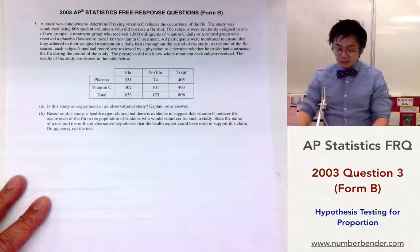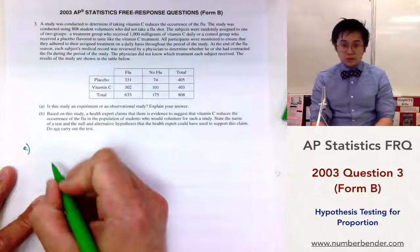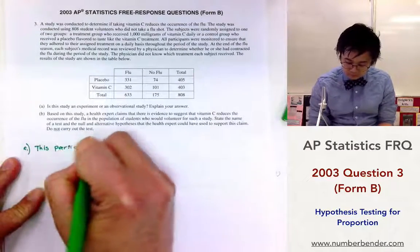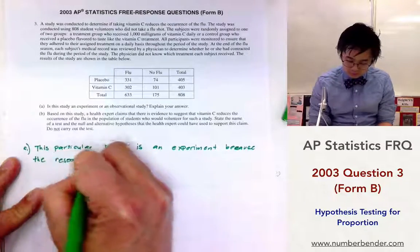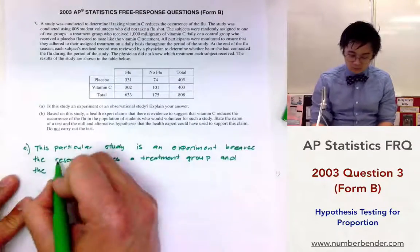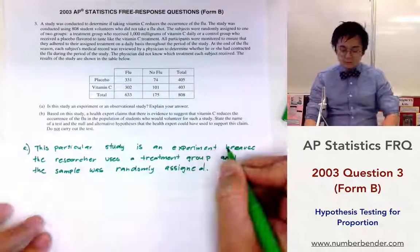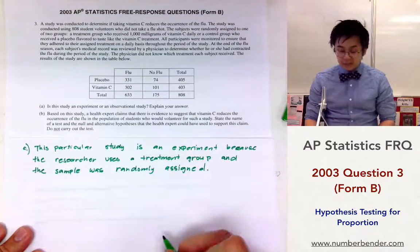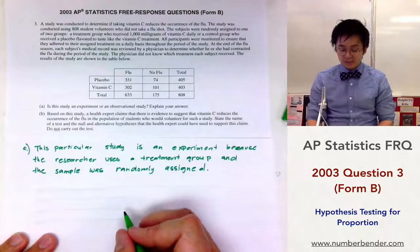So to write out our answer for letter A — this is our explanation for why this particular study is an experiment.